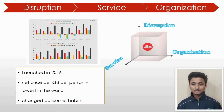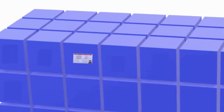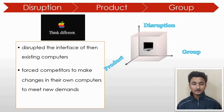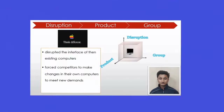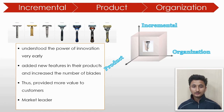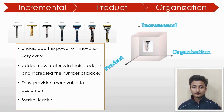The next example is disruption-service-organization: Jio. Reliance Industries launched Jio in 2016 and provided telecom services never seen before in India. Because of them, the overall net price per GB dropped to the lowest in the world, completely changing consumer habits. Next is disruption-product-group: Macintosh. The Macintosh team at Apple disrupted the interface of existing computers by introducing many small functions that changed accepted features, forcing competitors to make changes to meet new demand. Next is incremental-product-organization: Gillette. Gillette understood the power of innovation early and added new features and blades to provide more value and maintain market leadership.